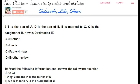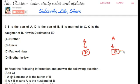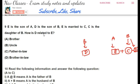Question 9: E is the son of A, so A is the father of E. D is the son of B. E is married to C, and since E is male, C must be female. C is the daughter of B. So B is the parent of both C and D. Since B's daughter is C and B's son is D, C and D are brother and sister. The question asks how D is related to E. D is the brother of C, who is E's wife — making D the brother-in-law of E. The answer is D: brother-in-law.